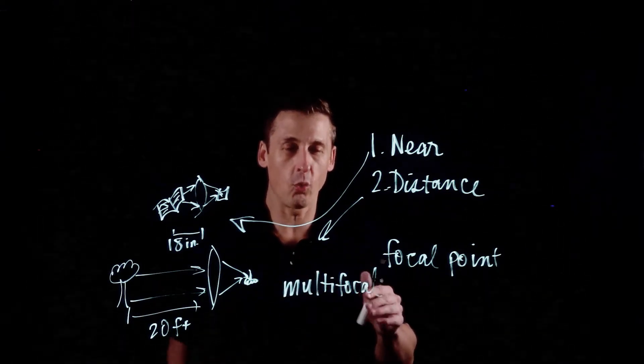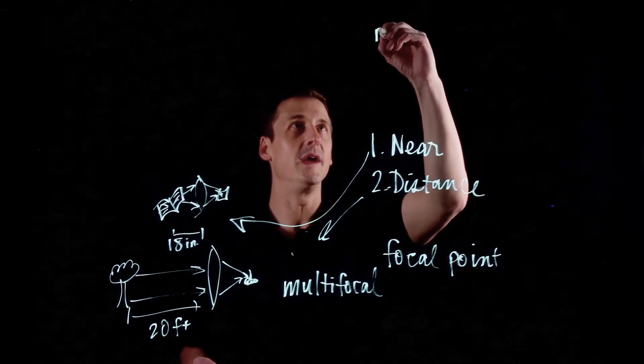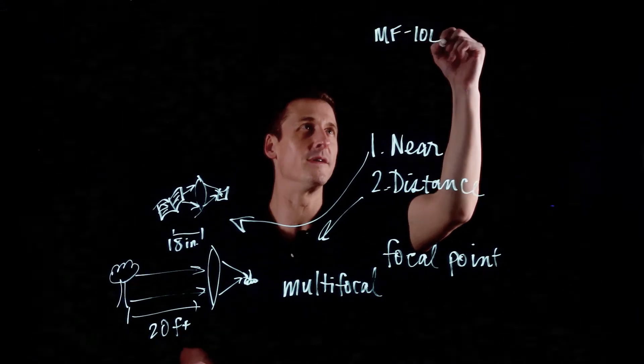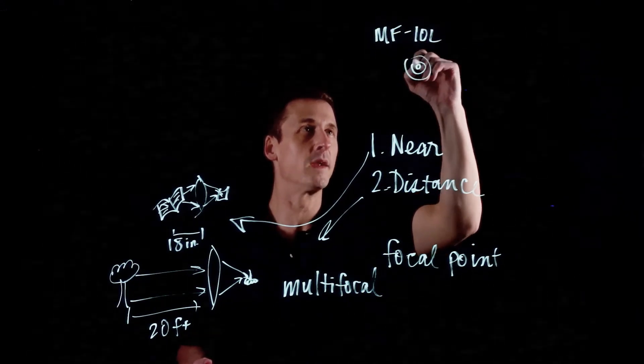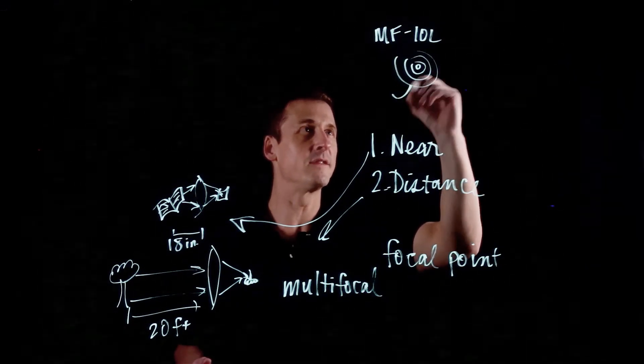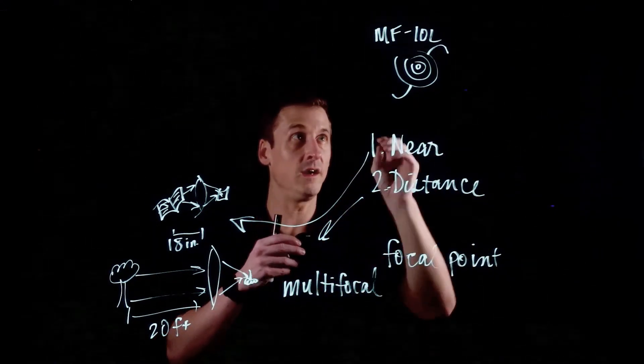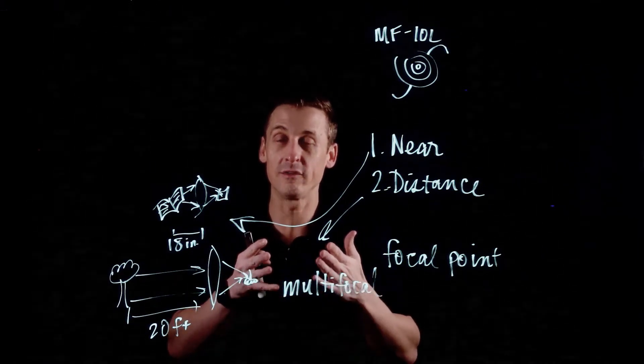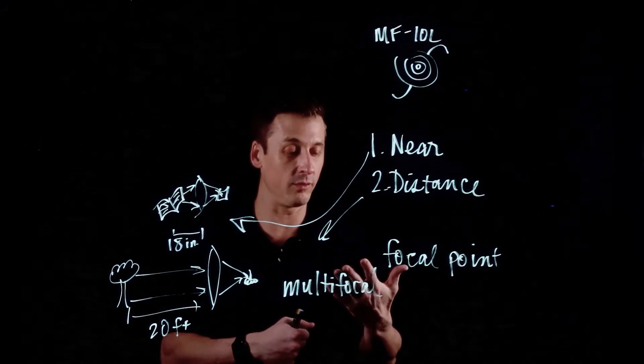The way that multi-focals work is that a multi focal lens, we shorten multi focal as MF, MF IOLs. The multi focal lens, it has rings to it, concentric rings, and then there's these little arms that come off like little haptic arms. The way a multi focal works is there's near and distance rings as you're looking out.